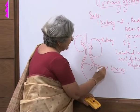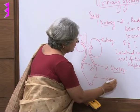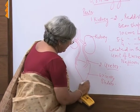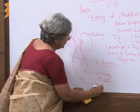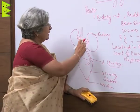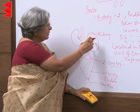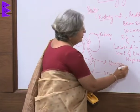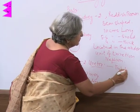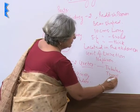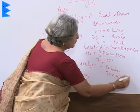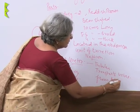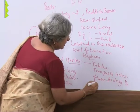The ureters open into a sac-like structure called the urinary bladder. In the diagram, this can be labelled as kidney, ureter, urinary bladder, and urethra. The ureter transports urine from the kidney to the urinary bladder.